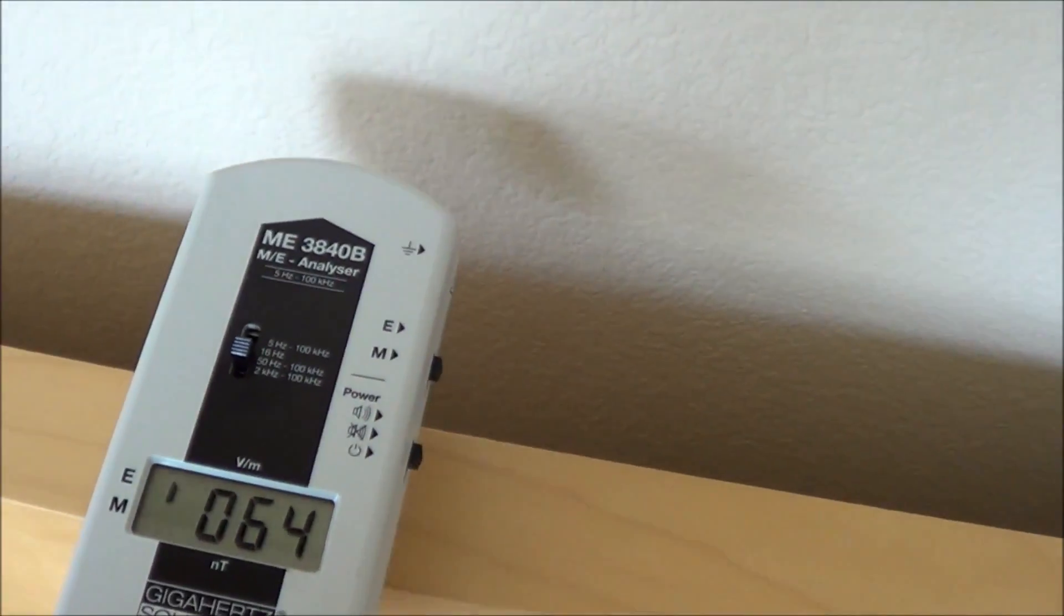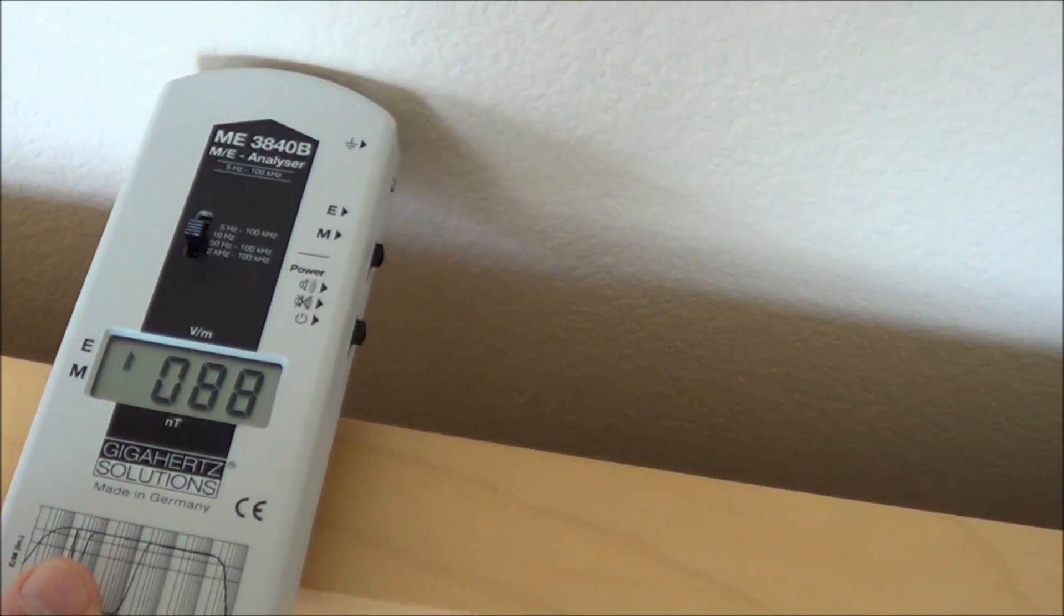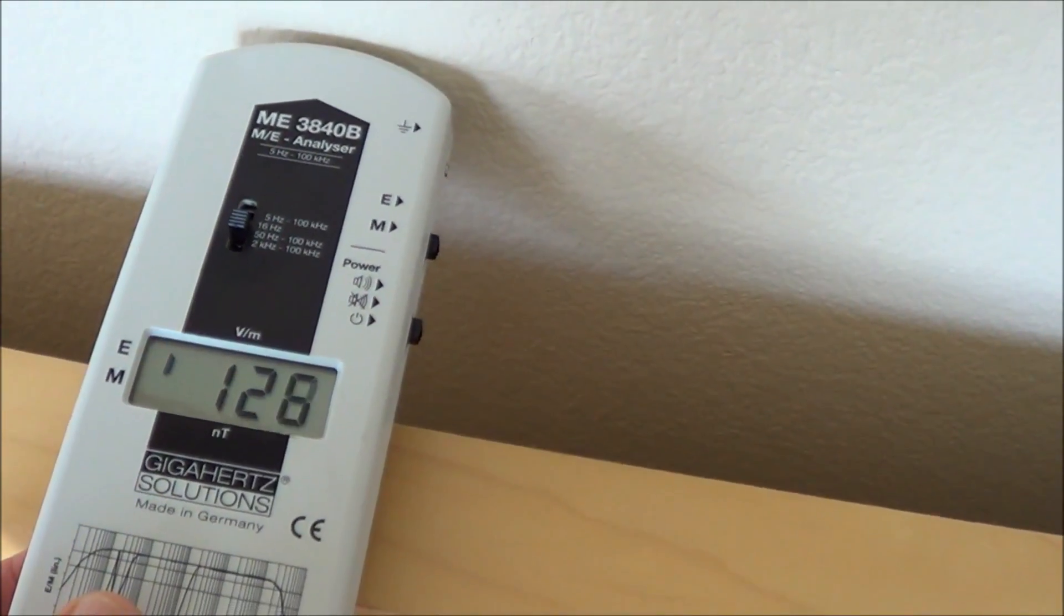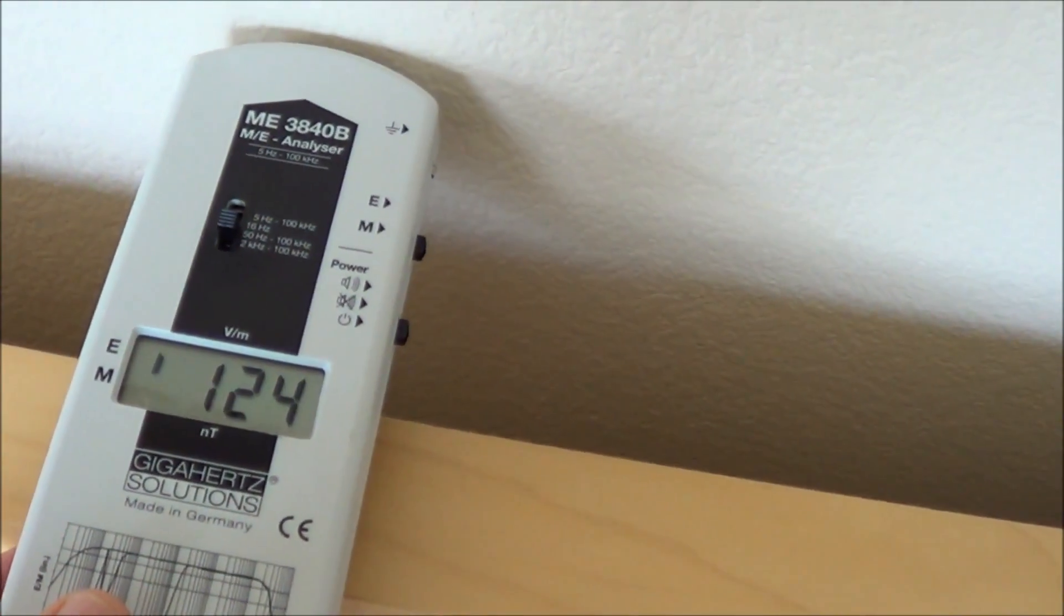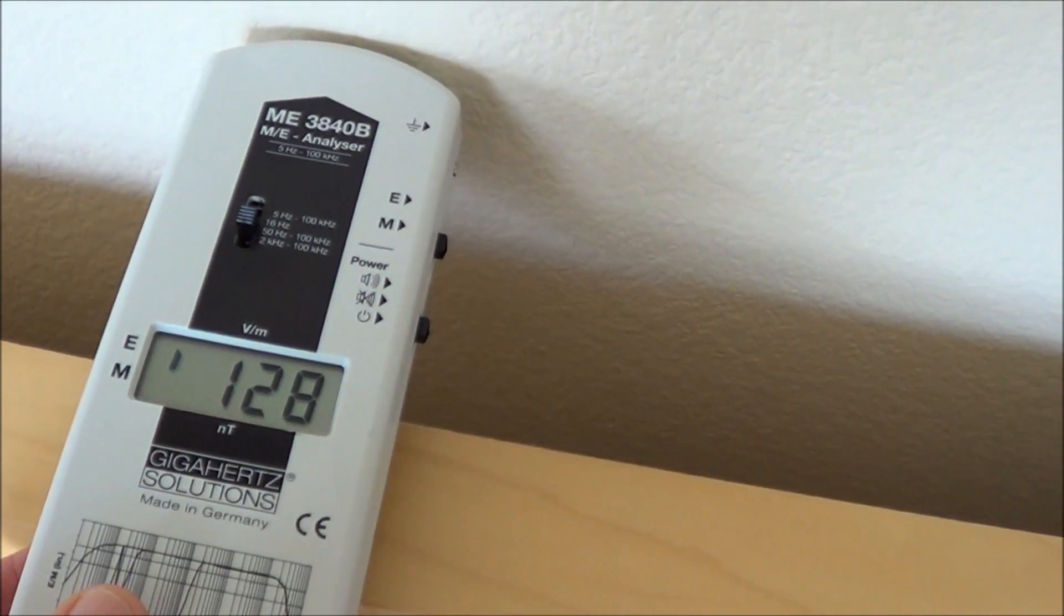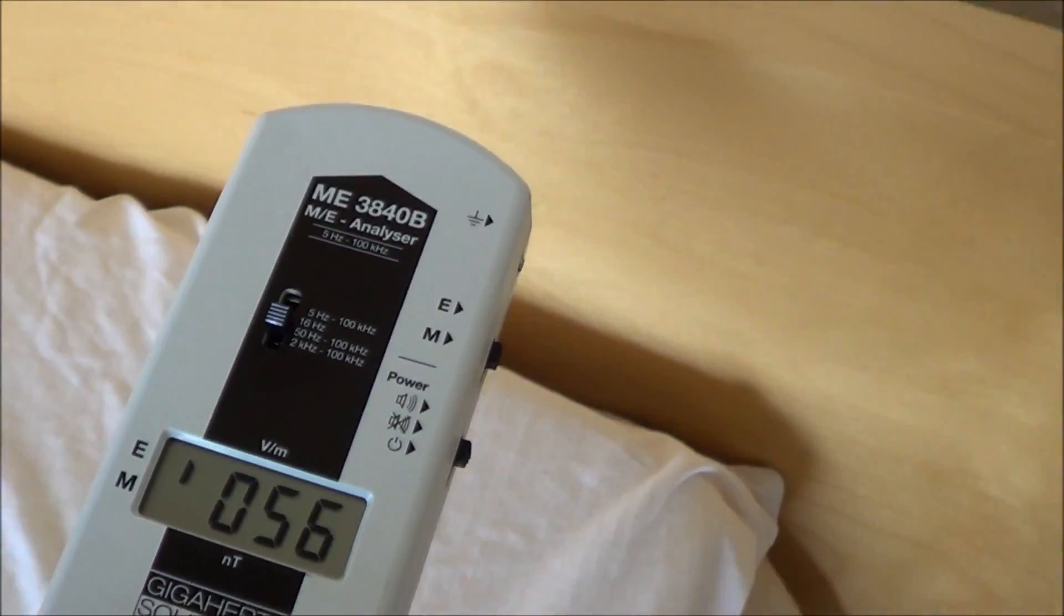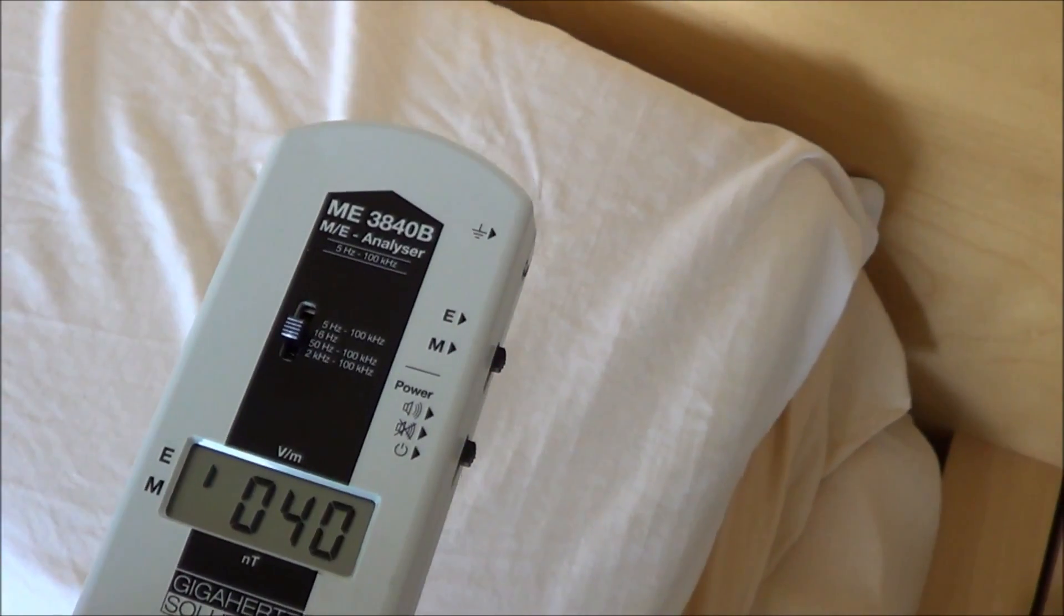As I move this closer to the wall, the electrical wiring in the wall is measuring again about 130-125 volts per meter. And as we move it away from the wall, it starts to drop down.